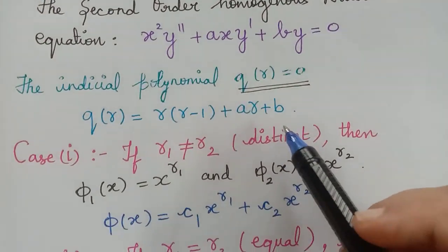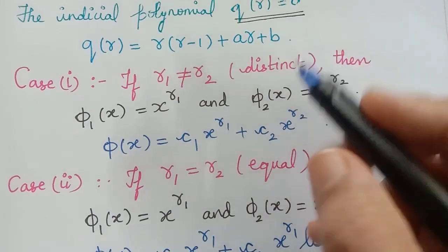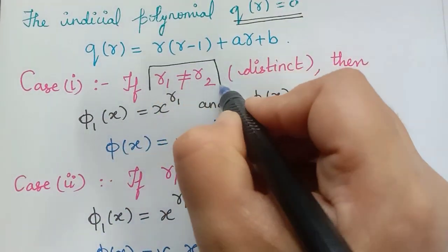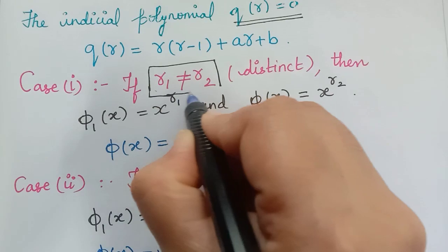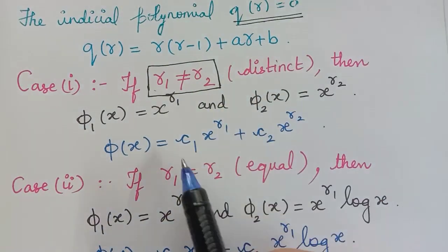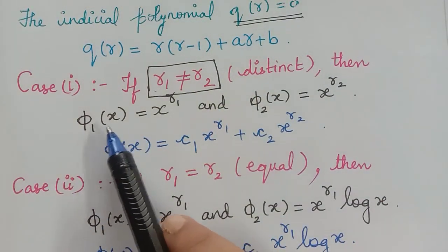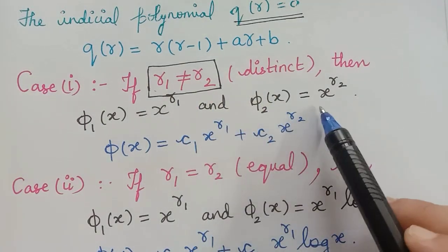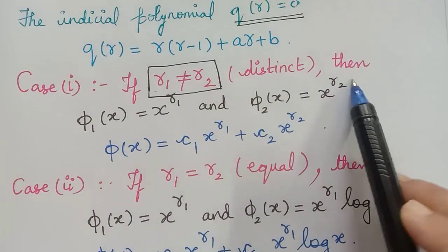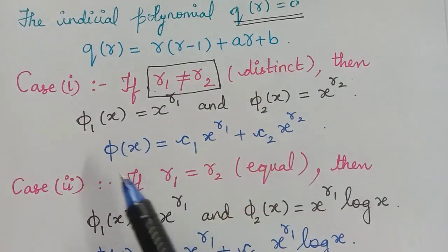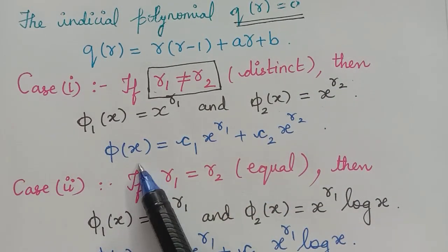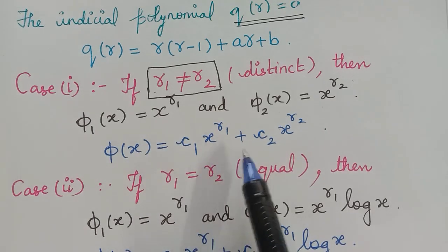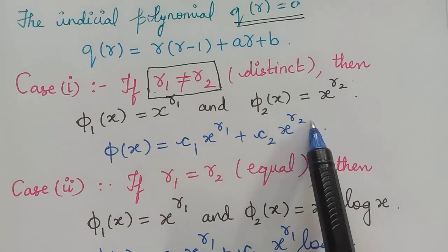We have different cases. First, if the roots are distinct, that is when r1 is not equal to r2, the solutions will be phi 1 of x equal to x power r1, and phi 2 of x equal to x power r2. Putting together, we get the general solution phi of x is equal to c1 x power r1 plus c2 x to the power r2.